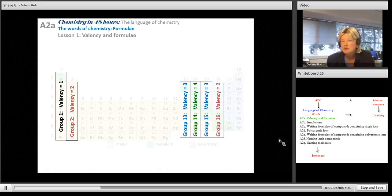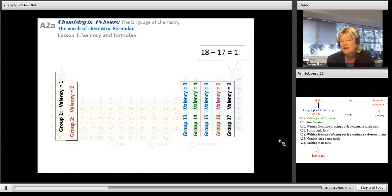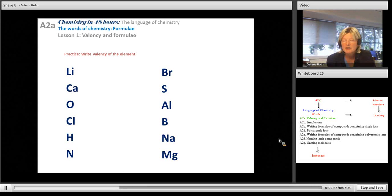I hope you've worked it out as 2 because 18 subtract 16 is 2. Group 17 elements have a valency of 1 because 18 subtract 17 is 1. The last group, Group 18, is known as the noble gases and they don't combine because 18 subtract 18 is 0. Let's practice by writing the valency of the element. Please learn the elements by group and have a periodic table handy. Here are the answers. I hope you got them right.